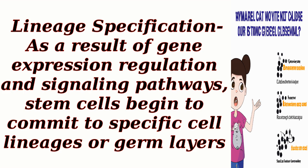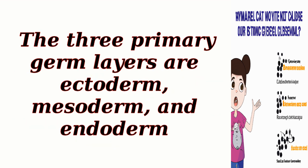Lineage specification: As a result of gene expression regulation and signaling pathways, stem cells begin to commit to specific cell lineages or germ layers. The three primary germ layers are ectoderm, mesoderm, and endoderm.